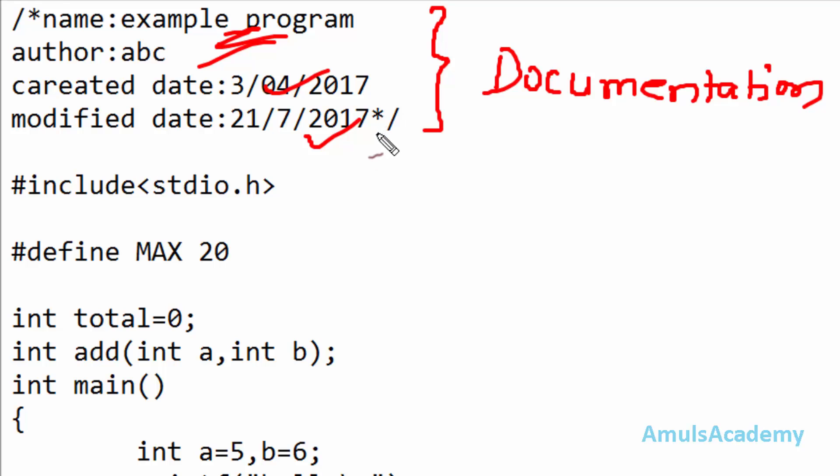This is the first section, and as I said, all the information is commented. That is, these are ignored during the compilation process. Here we can see the comment symbol - this is the multi-line comment.